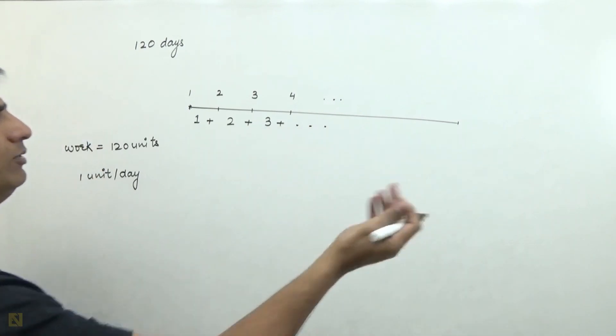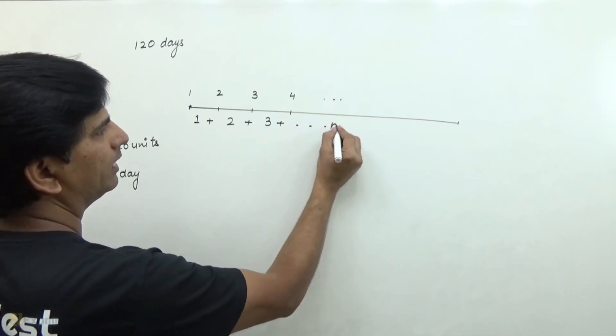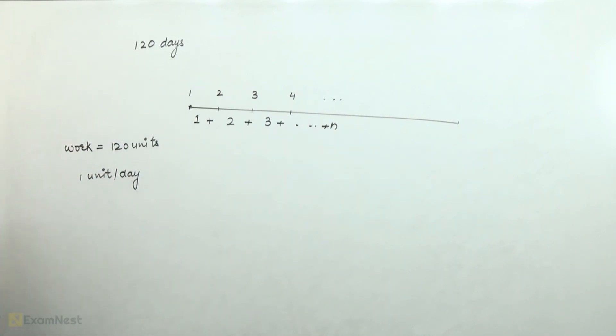We need to find out in how many total days our work will be completed. That is, how much is the work? 120 units.